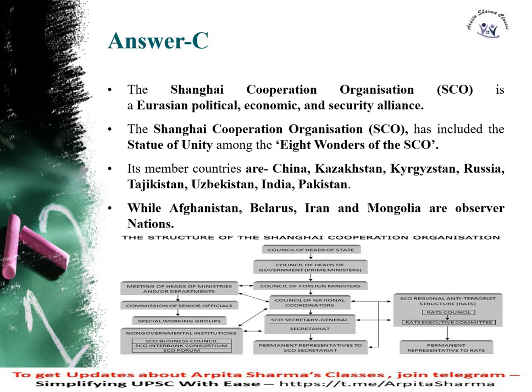The answer here is C. The Shanghai Cooperation Organization is a Eurasian political, economic and security alliance. The SCO has included the Statue of Unity as its 8th wonder. The member countries are China, Kazakhstan, Kyrgyzstan, Russia, Tajikistan, Uzbekistan, India and Pakistan. Afghanistan, Belarus, Iran and Mongolia are the observer nations.